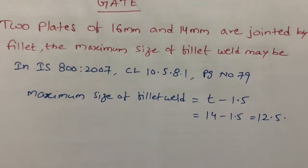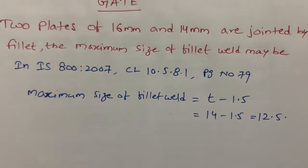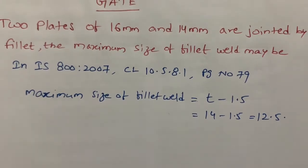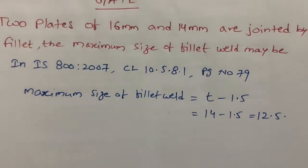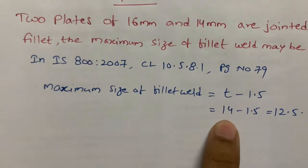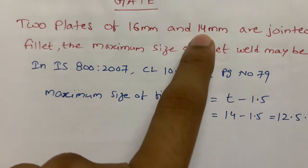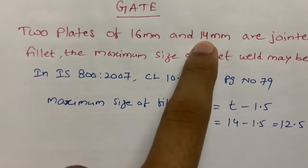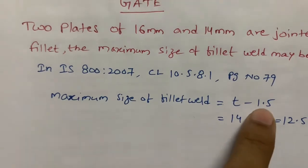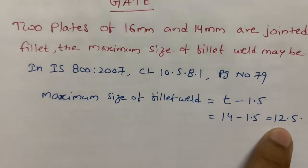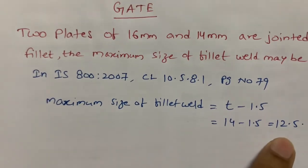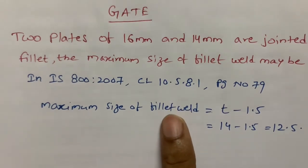As per the code, page number 79, clause 10.5.8.1, the maximum size of fillet weld is the plate thickness minus 1.5 mm. There are two plates of 16 mm and 14 mm, but we take the least value — 14 mm — because failure occurs at the least value. So thickness minus 1.5 gives 14 minus 1.5 equals 12.5 mm. Therefore, the maximum size of fillet weld is 12.5 mm.